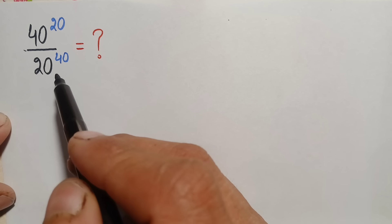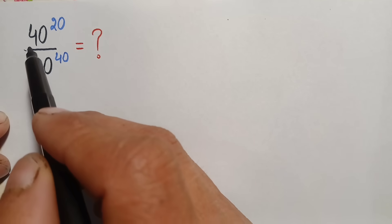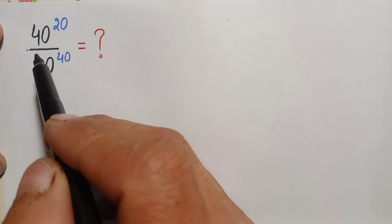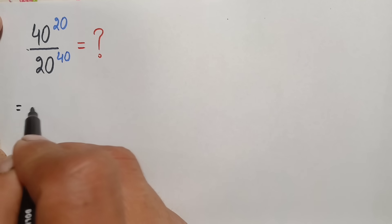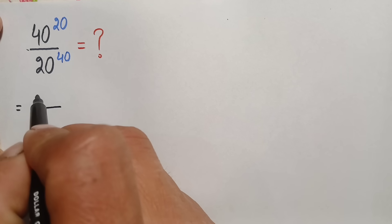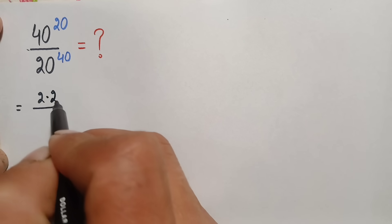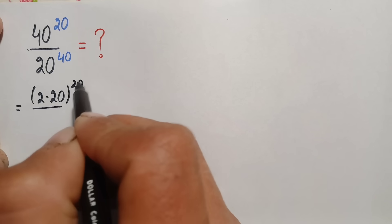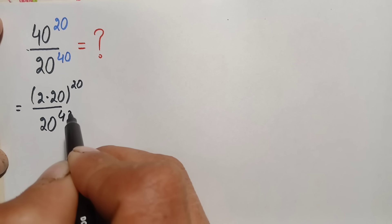I will solve this problem using two different methods. In the first method, we will factorize the base to make the two bases the same. So we can write the numerator: 40 can be written as 2 times 20. So we have 2 times 20, raised to power 20, divided by 20 raised to power 40.